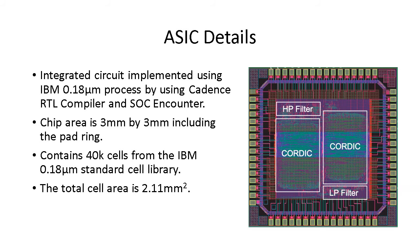Now we see the details behind the ASIC implementation. It was implemented using Cadence RTL compiler and SOC Encounter. The final chip has a 3x3 mm area including the pad ring and contains 40,000 cells of the 0.18 micrometer standard cell library. The total area was 2.11 mm², and we can see on the chip image that the CORDIC component is taking up the majority of the chip real estate.